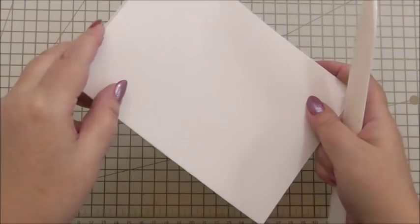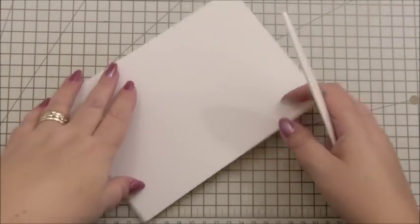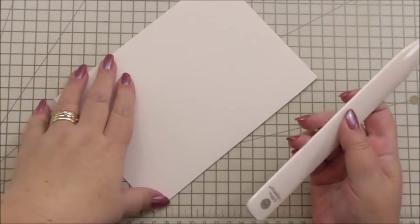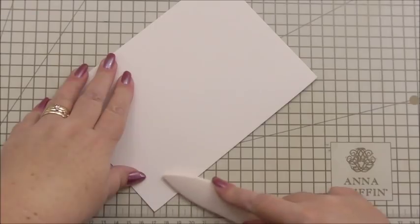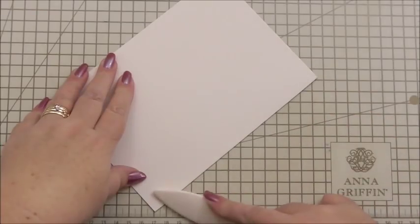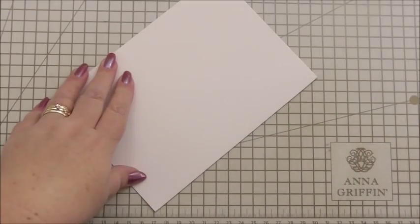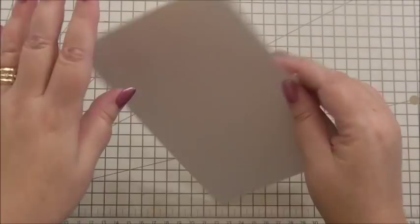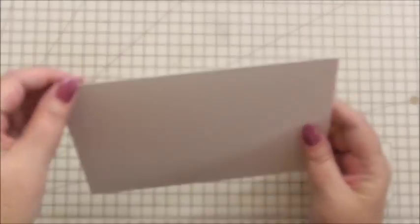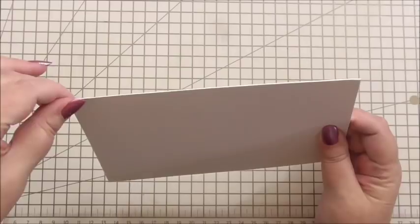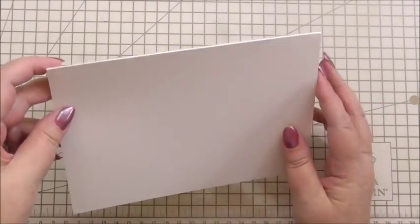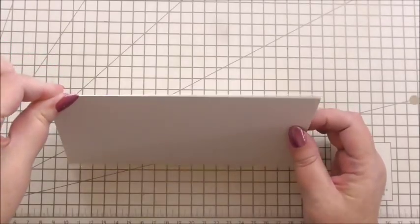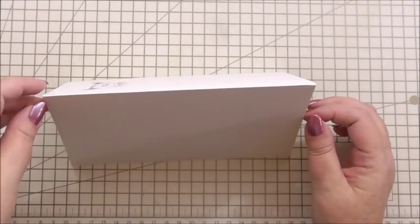Now I'm going to take my bone folder, and for any new viewers, this is in the Anna Griffin tool collection. I'm simply going to run it along the edge of the card to make sure we've got a nice sharp crease. Even though these are factory scored and folded, they're not the best crease in the world. It's always nice to use your bone folder to make it nice and sharp so when it stands up, it looks nice and professional.